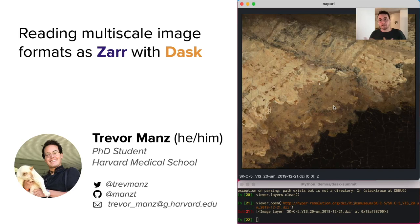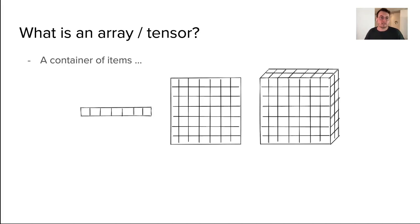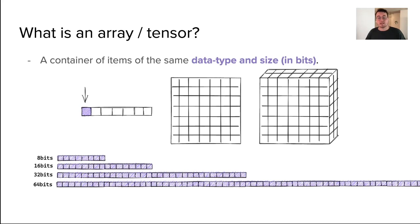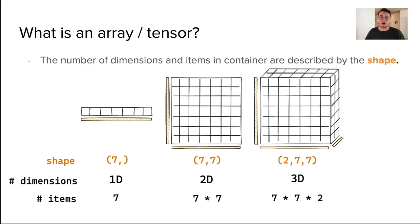We can think of an image as simply a multi-dimensional array. As a refresher, an array is simply a container of items where each item is of the same data type and size in bits. The number of dimensions and items in that container are also described by the array shape.